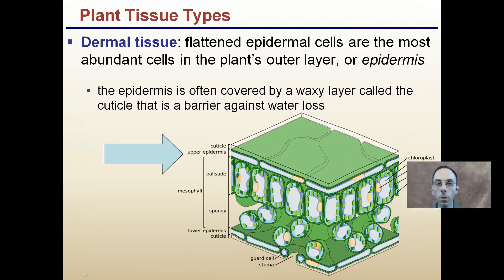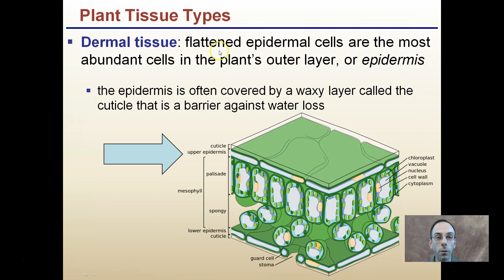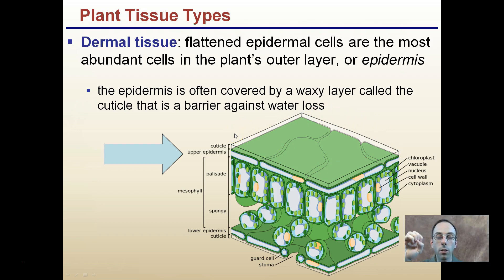Moving on to dermal tissue — the flattened epidermal cells are the most abundant cells in the plant's outer layer, or epidermis. The epidermis is often covered in a waxy layer called the cuticle, which is a barrier against water loss. Here's our cuticle and upper epidermis. We don't want our plants to dehydrate, so they have this protective layer. Like the cuticle on your nails provides protection, in plants the cuticle prevents random water loss through the leaves, allowing them to control water loss through their stomata.